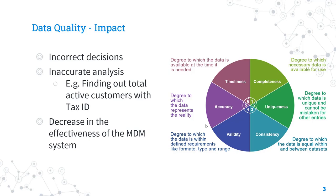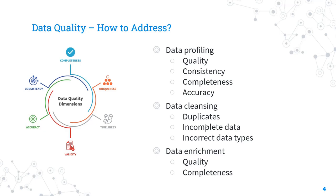To address this data quality issue, it is necessary to implement a rigorous data validation process. This process should include data profiling, data cleansing, and data enrichment. Data profiling involves examining the data to identify its quality, consistency, and completeness. Data cleansing refers to the process of removing or correcting errors in the data — such as duplicate records, incomplete data, or mismatched data types like some sources sending integer and others sending varchar. Data enrichment involves adding new data to the existing dataset, such as using a standard version of a country code.